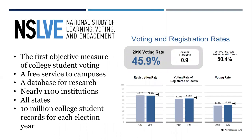NSOLV, the National Study of Learning, Voting, and Engagement, serves as the first objective measure of college student voting. It's a free service that we provide to campuses, and in addition to providing over 1,000 campuses with this individual campus-level data, it also serves as a database for national research. Our dataset consists of campuses across all 50 states and over nearly 10 million college students for each election year.